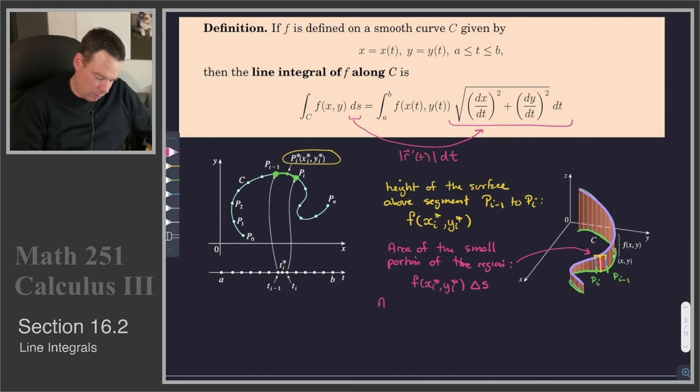So the area of the whole—and I'll put curtain in quotes—the area of this curtain or this shaded region, that will be the sum over all of the f(xᵢ*, yᵢ*) times Δs. And then we take the limit as Δs goes to 0.